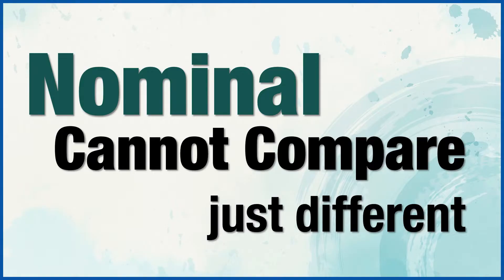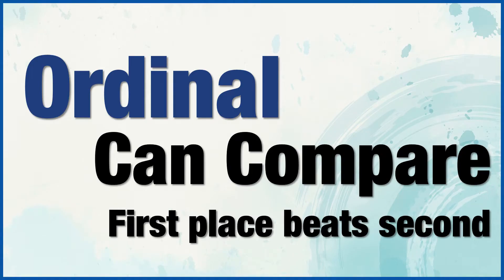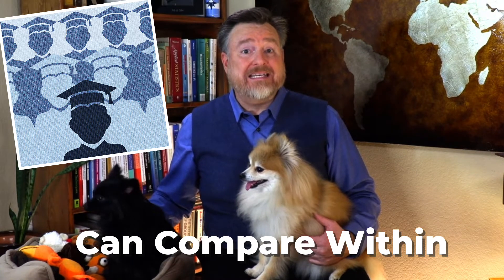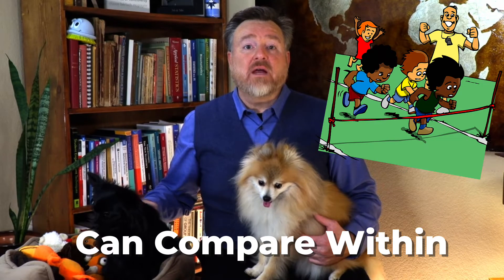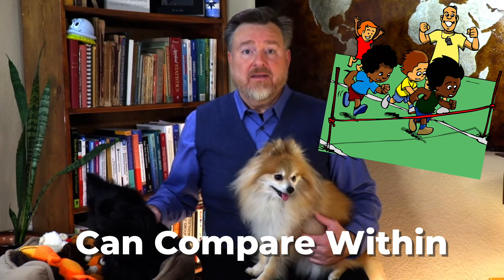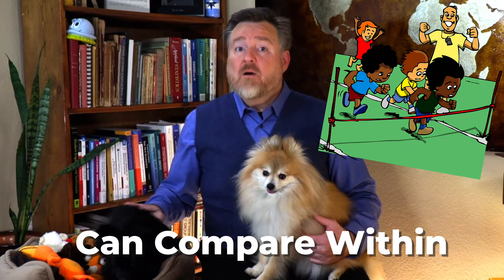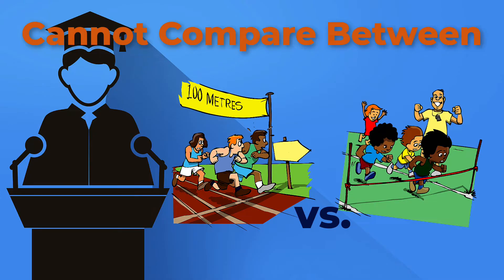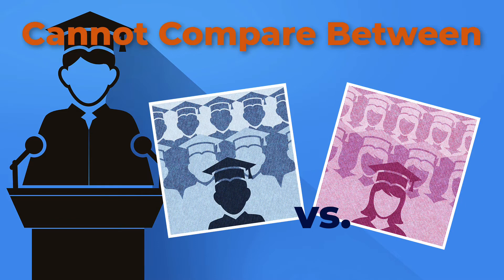You can't compare nominal scores, except to know that the red team is different than the blue team. But with ordinal scores, you can compare within the rankings. The valedictorian is always first place in the graduating class. The winner of the race is always the fastest runner in that race. But you cannot compare between rankings — you cannot tell if the winner of this year's race is faster than last year's winner, or if this year's valedictorian is smarter than last year's.